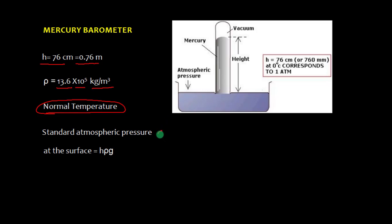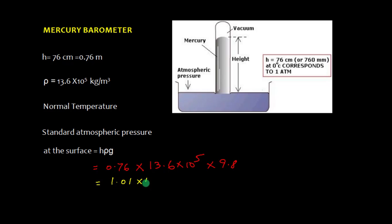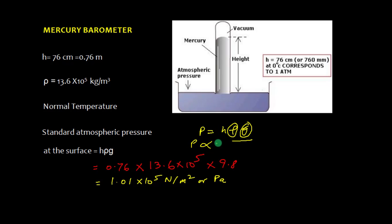Let's find the standard atmospheric pressure at the surface of earth. Using the formula P = Hρg: h = 0.76, ρ = 13.6 × 10³, and g = 9.8. Computing this gives 1.01 × 10⁵ Newton per meter square, or Pascal — that is the atmospheric pressure. We should note that atmospheric pressure is directly proportional to height h, since in P = Hρg, both ρ and g are constant for a given area.